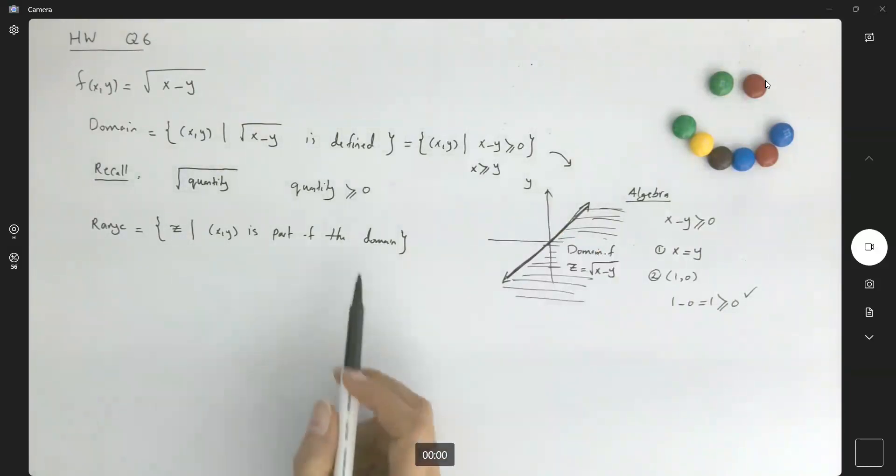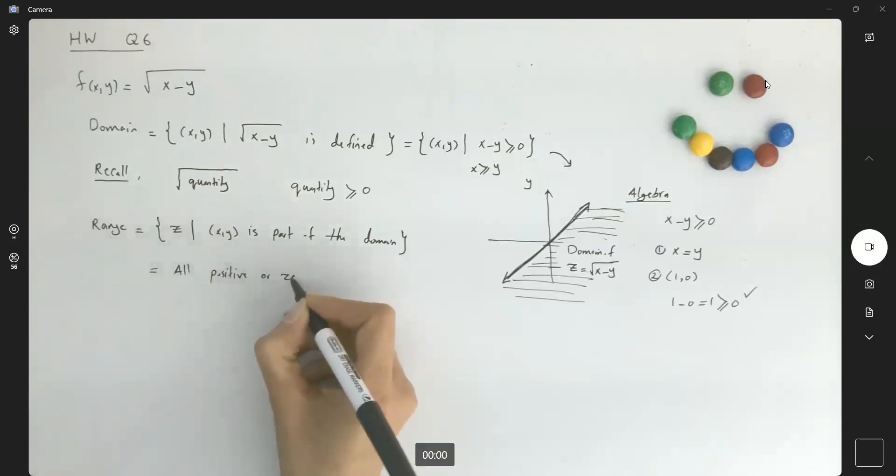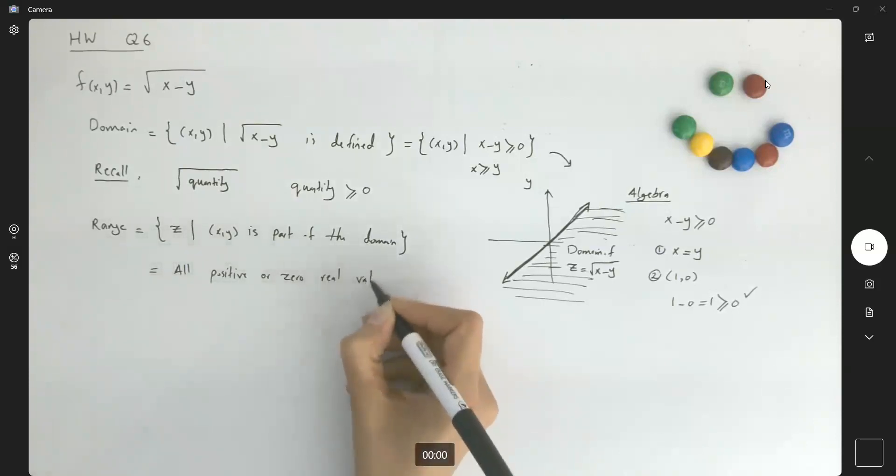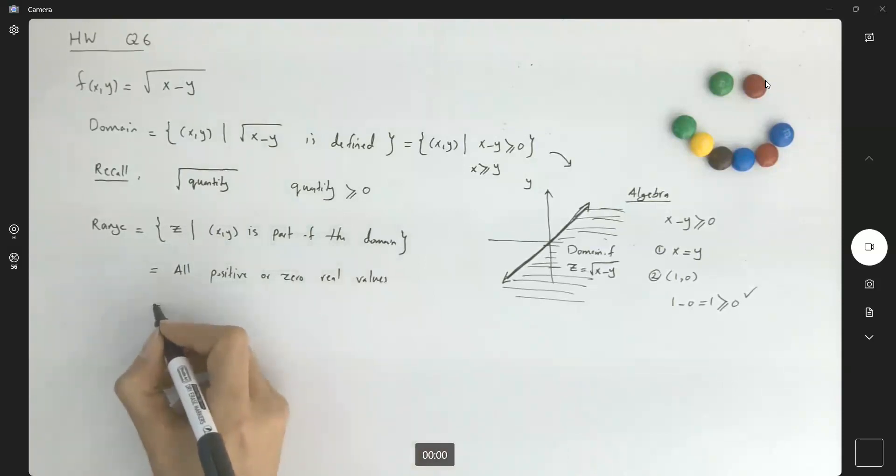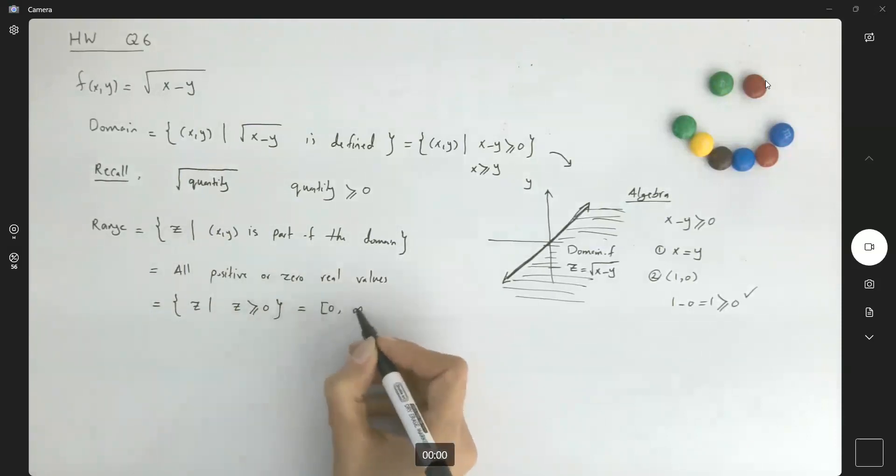Well, in that case, when you're analyzing the range, the range can only take on positive or zero z values. They are above x, y. So all positive or zero real values. Another interpretation: here you have all z values where z is larger than or equal to zero, or [0, positive infinity). That's the range of the function.